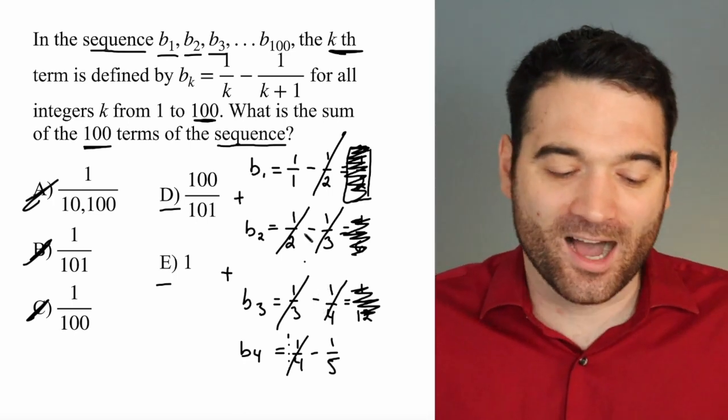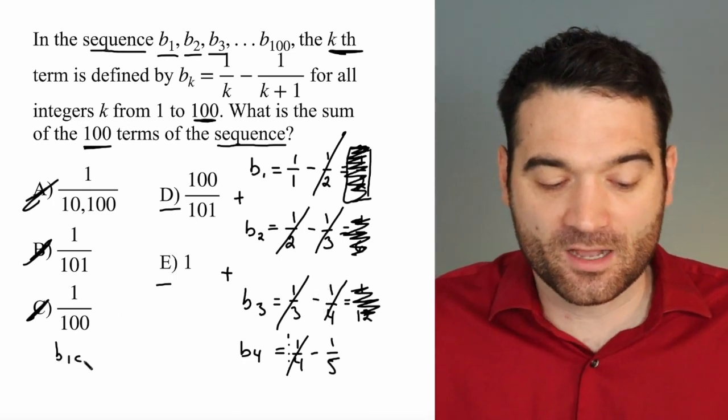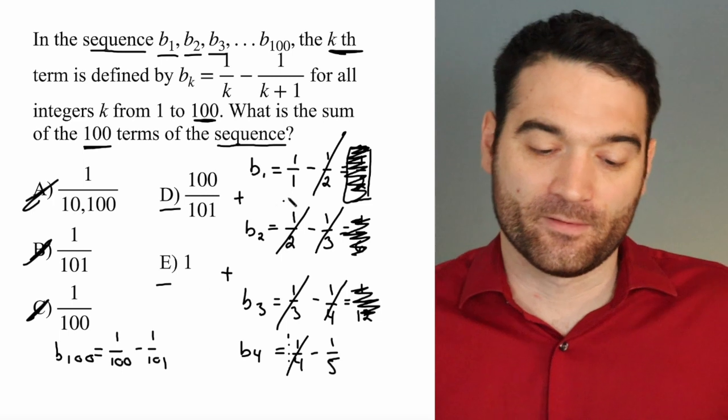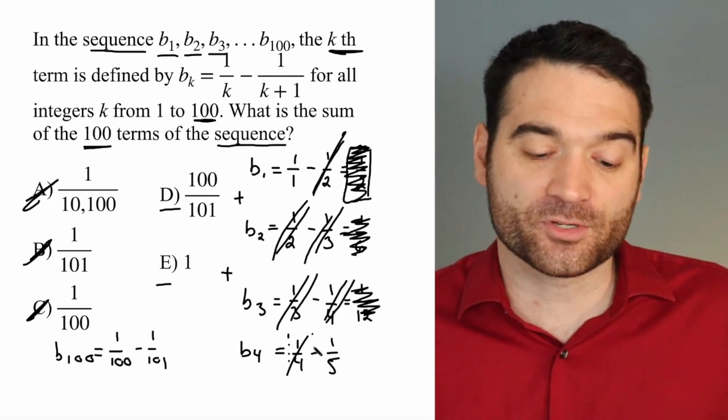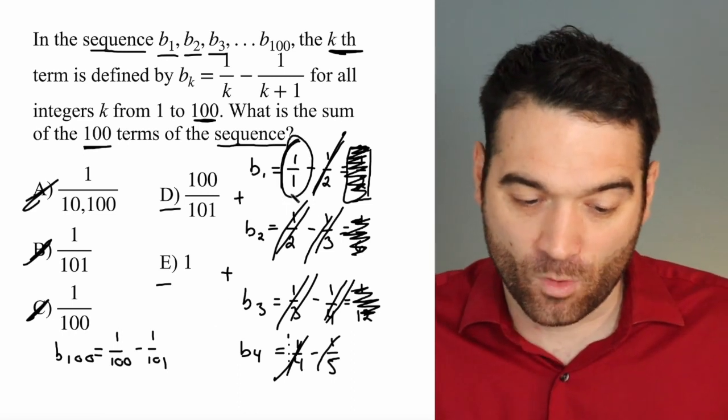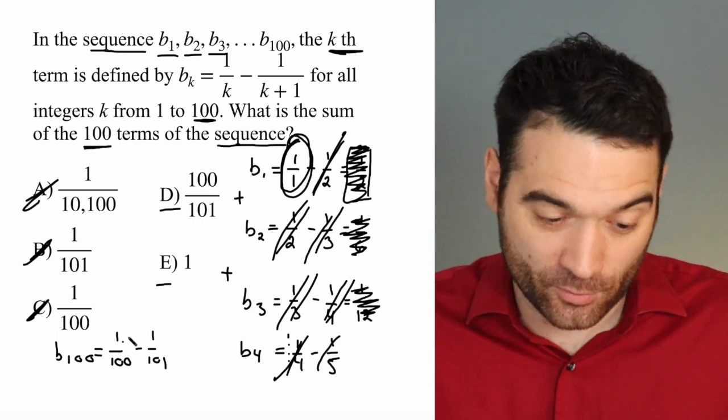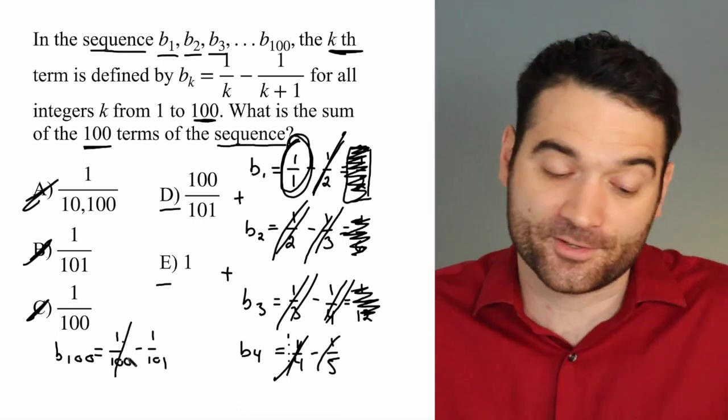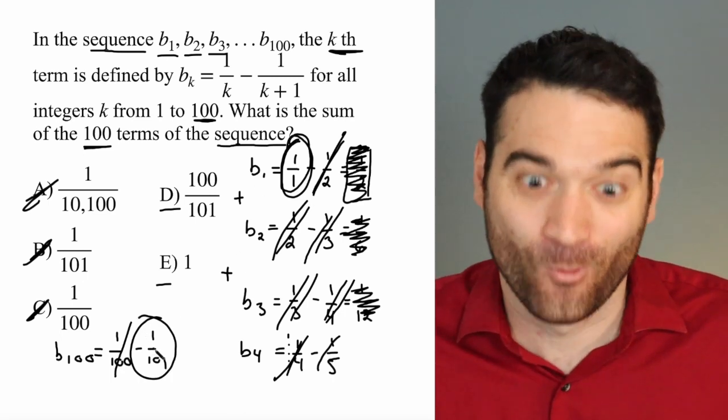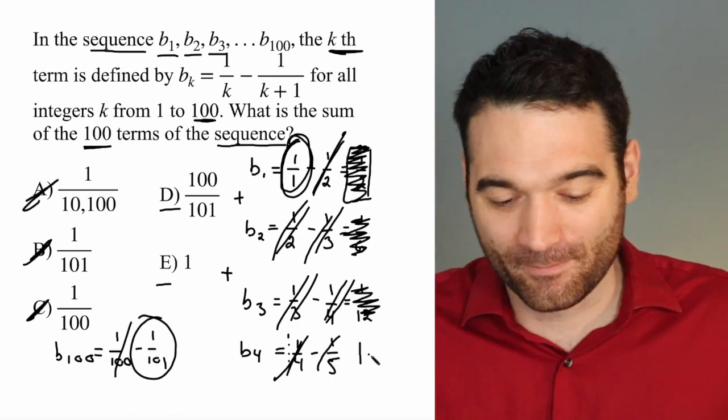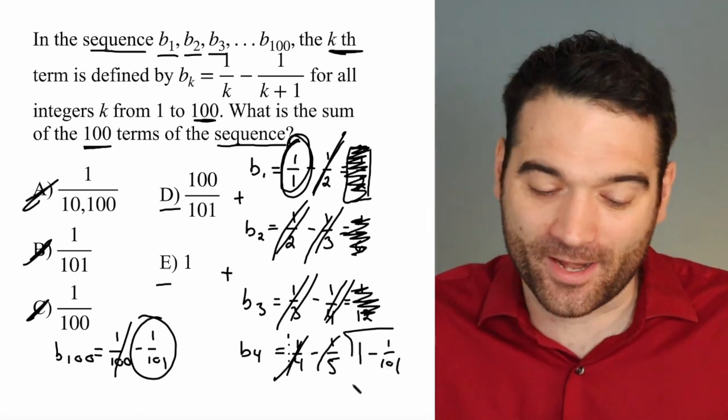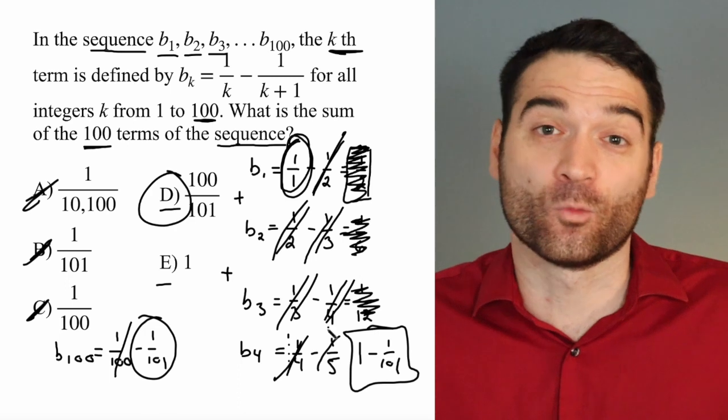So let's go to the 100th term. I'll write it over here. B sub 100 is equal to 1 over 100 minus 1 over 101. As I've seen in this pattern, all of these numbers in the middle cancel out. So this one doesn't have anything to cancel with. I'm left with 1 over 1, but I've canceled all the numbers, including 1 over 100 because the 99th term cancels out there. And I'm left with 1 over 1 minus 1 over 101. So that's 1 minus 1 over 101. A lot of 1s in this problem. And when I do that, when I use my fraction rule, that comes out to 100 over 101.